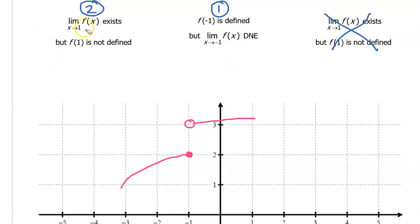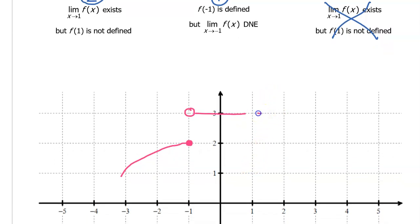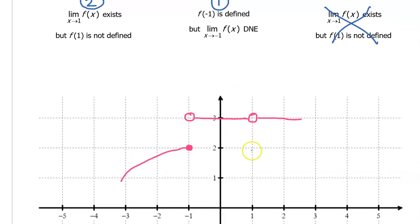For the second condition, the limit as x approaches 1 exists, but the value of f at 1 is undefined. Because the limit exists, we have to approach the same value from the left of 1 and from the right of 1. But right at 1, the function is undefined, so we put an open circle here. The limit still exists because we are approaching the same value from left and right, satisfying the second condition.